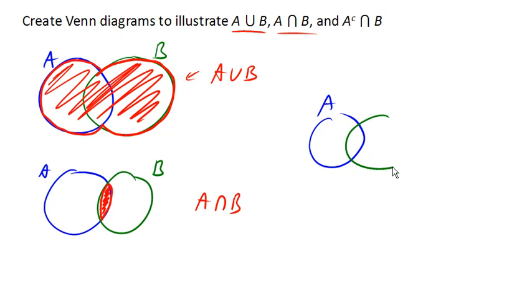Finally, for our last one here, we've got A complement intersect B. So again, remember A complement means everything that's not in A. So we're outside of set A. But we're inside of set B. So it's everything that's inside set B that's not in set A. And so that would be this region there.